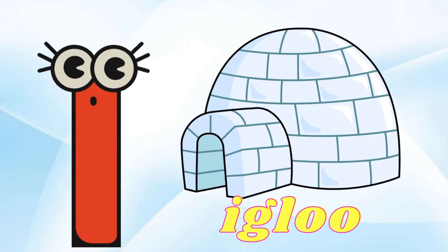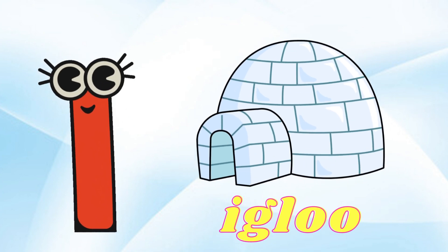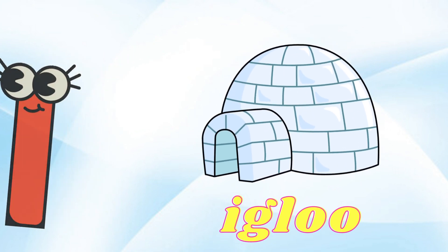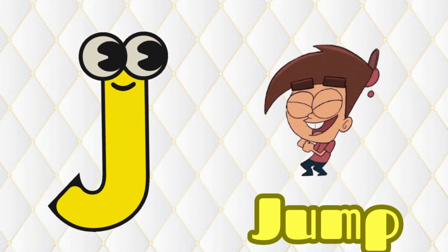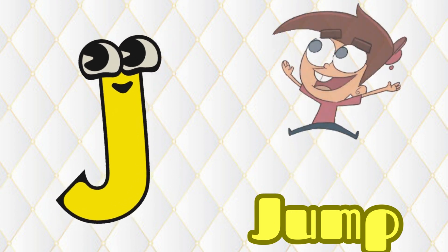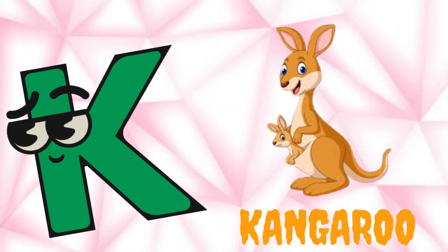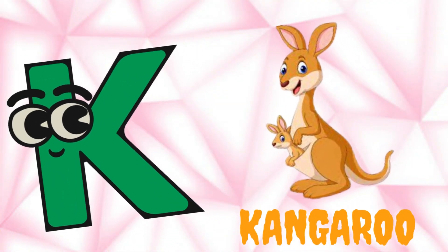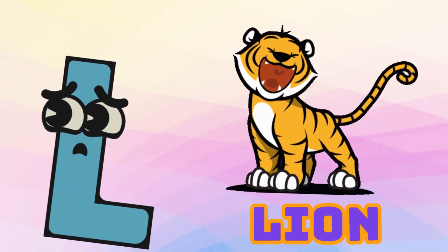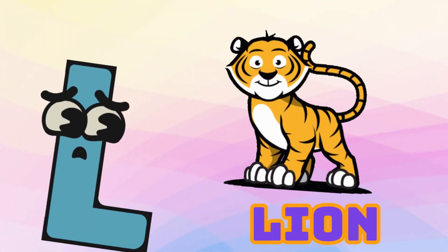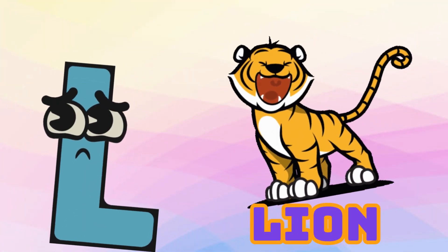I is for Igloo, I-I-Igloo. J is for Jump, J-J-Jump. K is for Kangaroo, K-K-Kangaroo. L is for Lion, L-L-Lion.